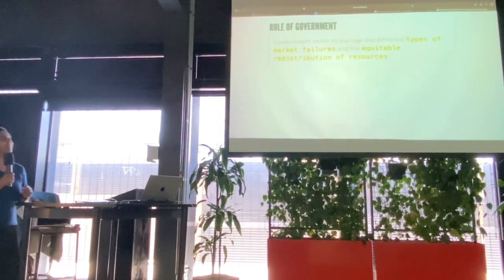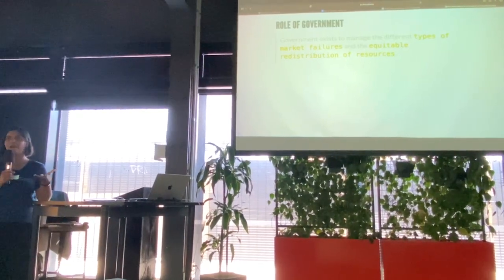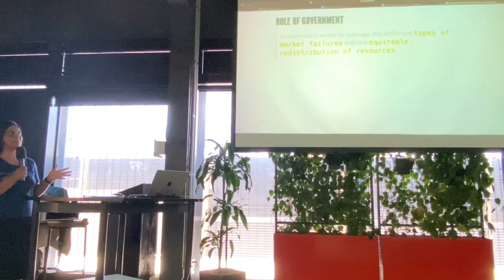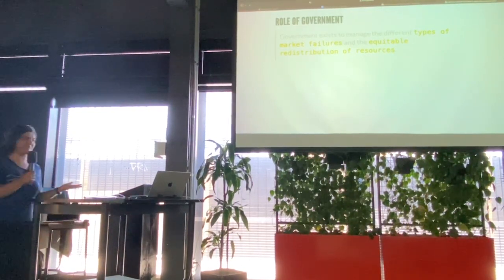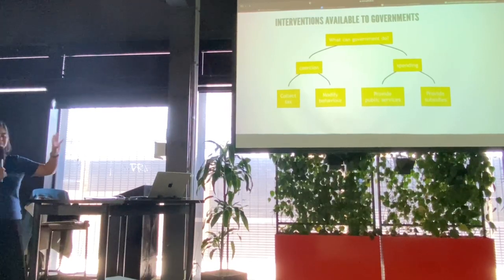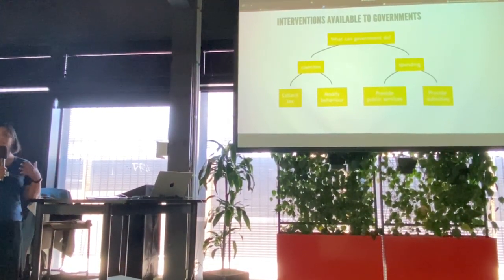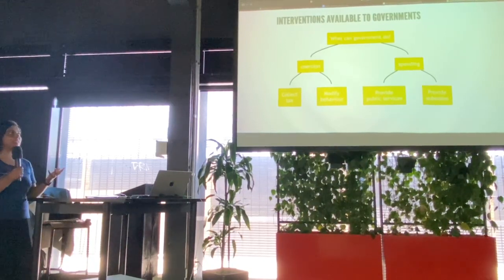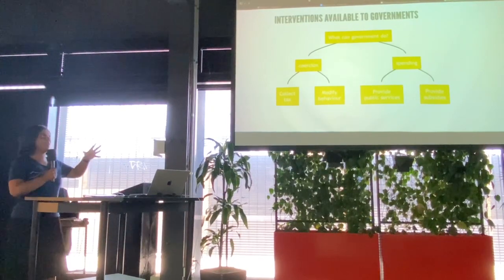So what is policymaking? First we need to understand what the role of government is. They really exist to deal with two functions: to deal with market failures, of which there are many different types, and to deal with equity in terms of the distribution of resources. Simplistically, they have only two interventions available. They can make you change your behaviour through regulation. And they collect tax, then spend to provide public services and subsidies. So there are two main branches of interventions.